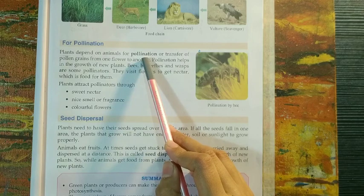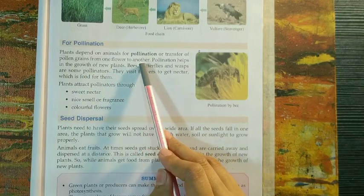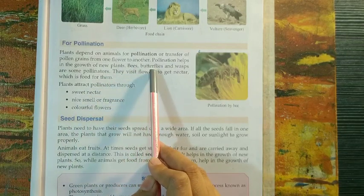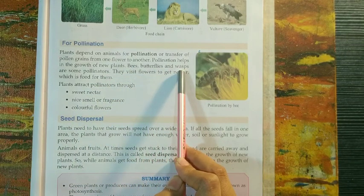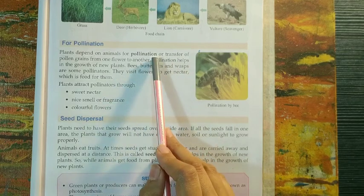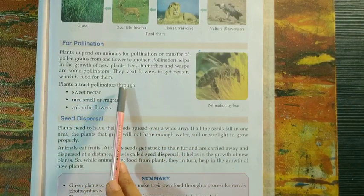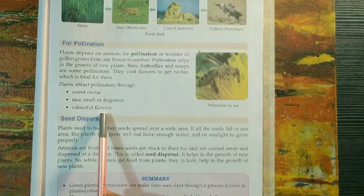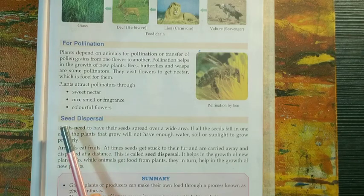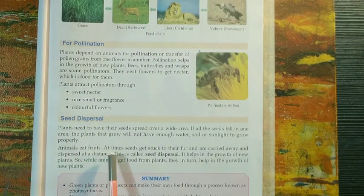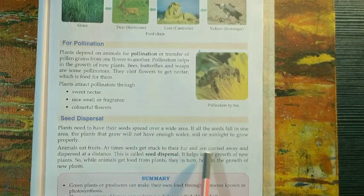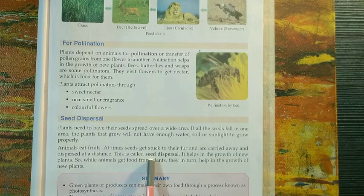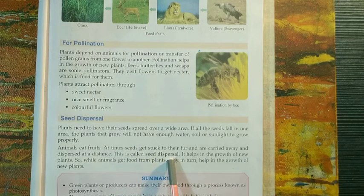Pollination is the transfer of pollen from one flower to another flower, and it helps in the growth of new plants. Bees, butterflies, and wasps are known as pollinators. Plants attract pollinators through sweet nectar, nice fragrance, or colorful flowers. Seed dispersal: animals eat fruits, and at times seeds get stuck to their fur and are carried away to distant places — this is called seed dispersal, and it also helps in the growth of new plants.